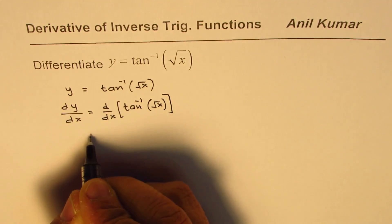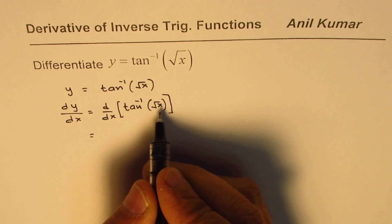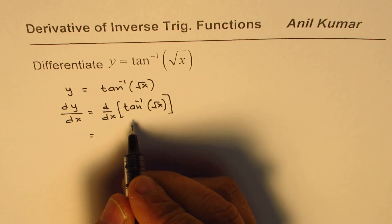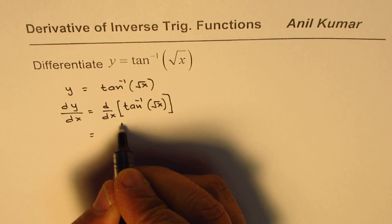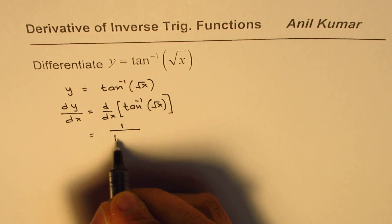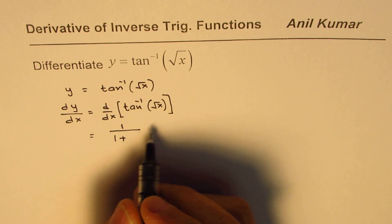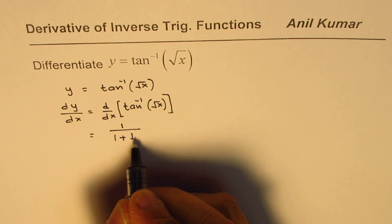The derivative of tan inverse x is 1 over 1 plus x squared, so we can write that here. That is 1 over 1 plus x squared, and x in this case is square root of x.